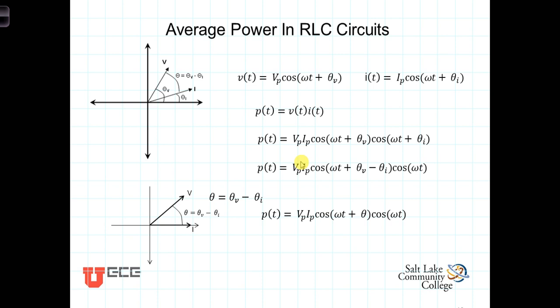Our discussion of average power thus far has dealt with isolated resistors, capacitors, or inductors. What about the situation where we have both resistance and inductance, or resistance, inductance, and capacitance all together in the same circuit? In general, the angle between the phase of the current and the voltage will not be the same, and they won't be 90 degrees out of phase with each other the way they were for a single inductor or capacitor.